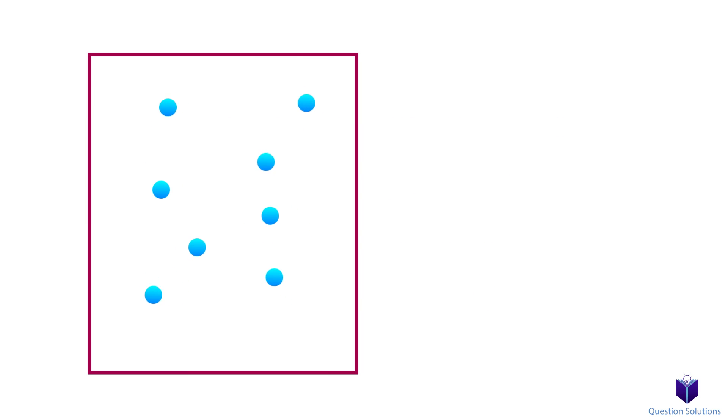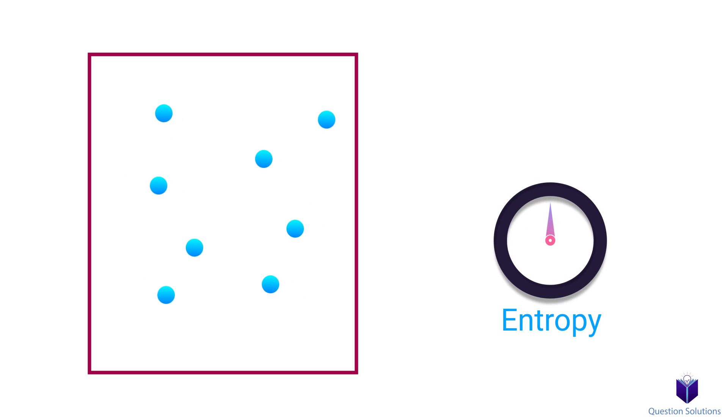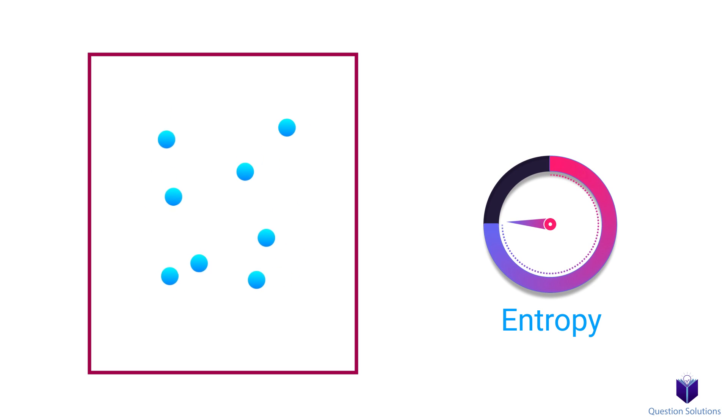You can think of entropy as molecular disorder or the randomness of molecules. When a system becomes disordered, the molecules become less and less predictable, and we say entropy increases. That means entropy is lowest in the solid phase of a substance and highest in the gas phase.